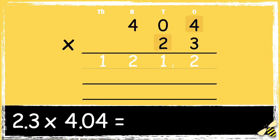Next, we need to multiply 2 tens by 4. As we're multiplying the number in the tens column, we need to use 0 as a placeholder in the ones column. So 2 times 4 is 8. Next is 2 tens multiplied by 0 tens. 2 times 0 is 0. Next, we multiply 2 tens by 4 hundreds. So 2 times 4 is 8.